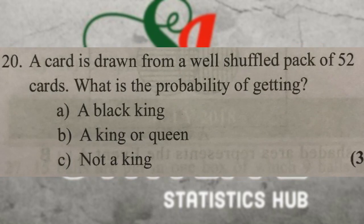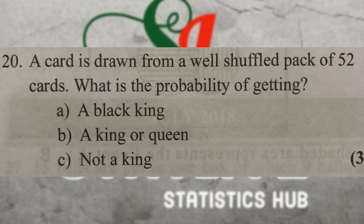A card is drawn from a well-shuffled pack of 52 cards. What is the probability of getting a black king? There are 2 black kings, so the answer is 2 by 52. For a king or a queen: there are 4 kings and 4 queens, giving 8 by 52. For a king or an ace: similarly 8 by 52.